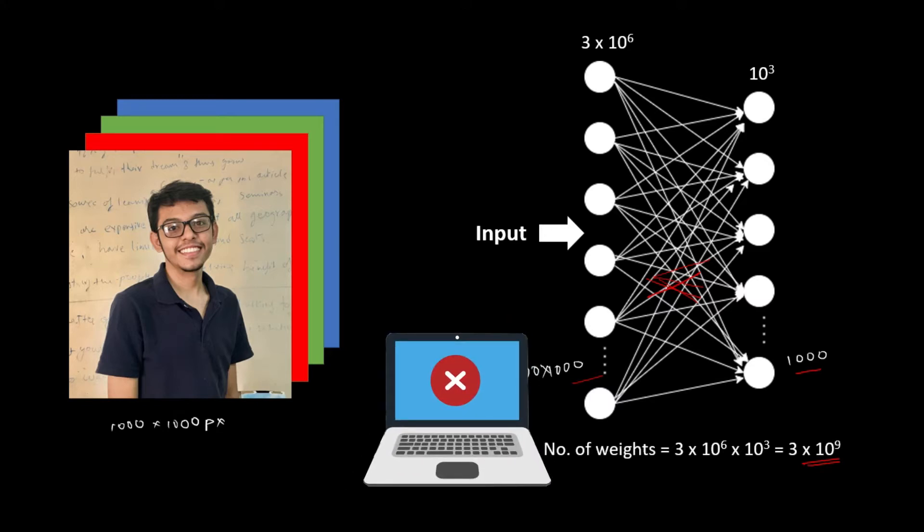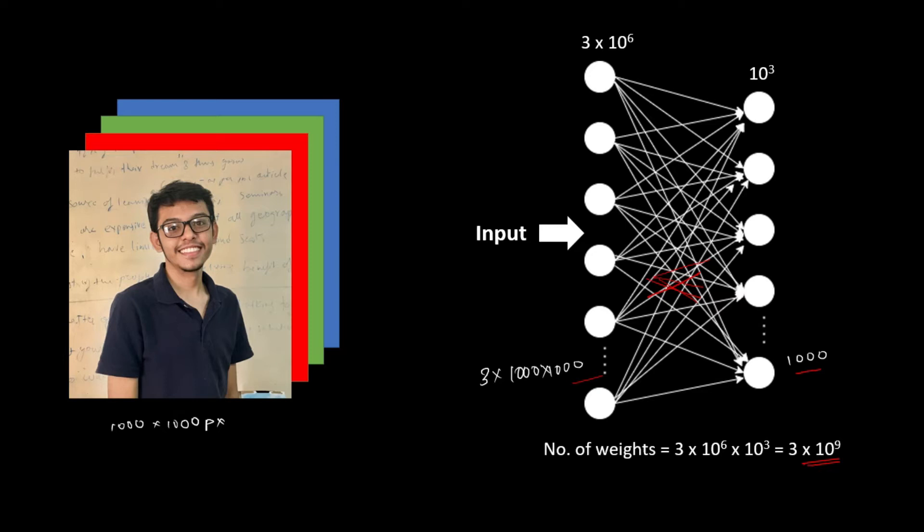And even if it can handle properly, then also the time required to train the model will be very high. And by the way, more number of neurons and more number of weight parameters also means overfitting. Thus, it can also affect the performance of our model as well. So, this is the limitation of the traditional simple neural network while dealing with the images.